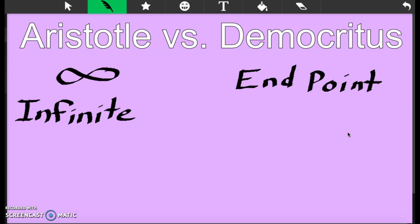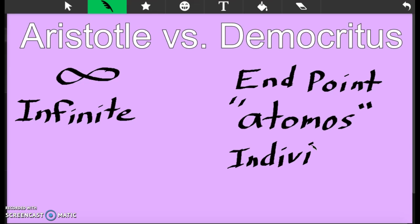Democritus said there was an end point. He called that end point atomos, which is the Greek word meaning indivisible. That's also where we get the modern word atom from.